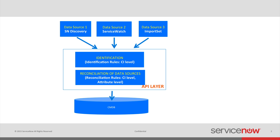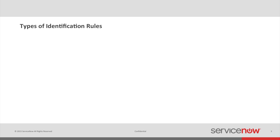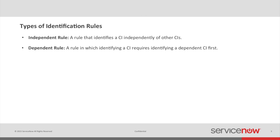The identification process relies on identification rules that can be one of two types: an independent rule, which identifies a CI independently of other CIs, or a dependent rule, where identifying a CI requires identifying a dependency first.